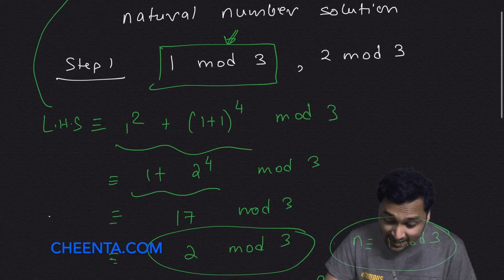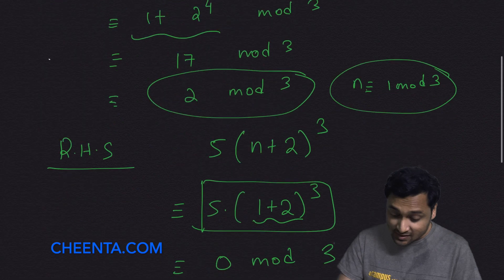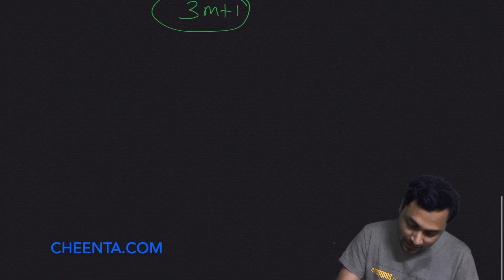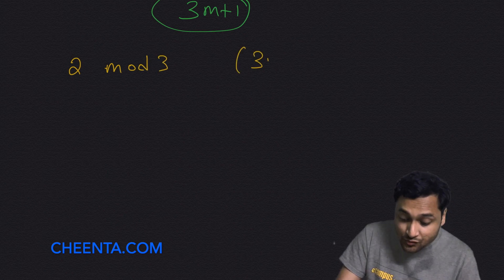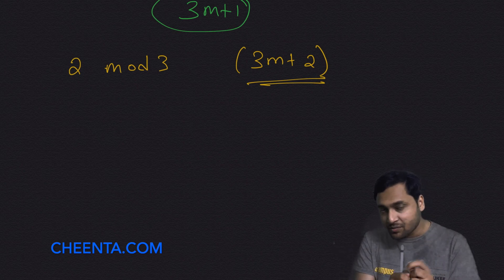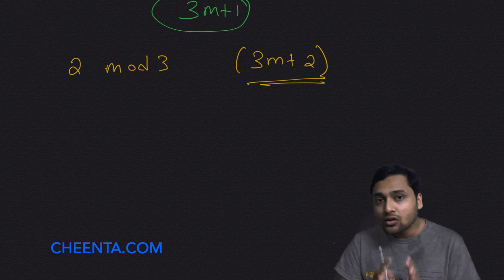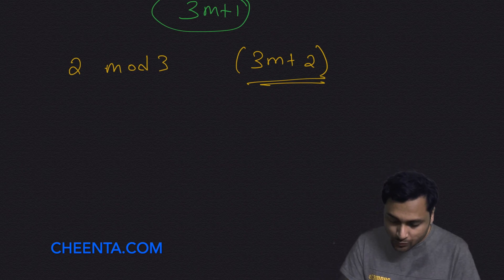The next part is to show that no numbers of the form 2 mod 3 will work either. Numbers of the form 2 mod 3 — basically 3m plus 2 — mean: divide the number by 3, the remainder is 2.